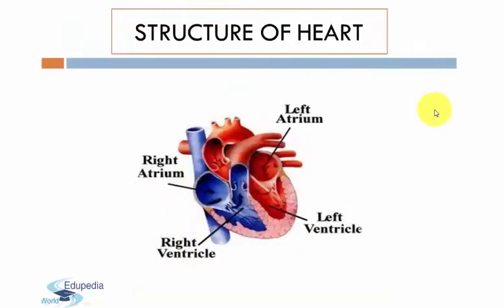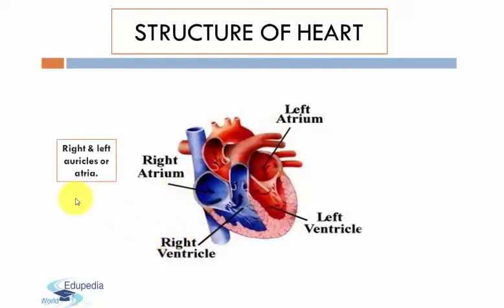There are four chambers present in the heart. The upper two chambers constitute the right and left auricles, or atria. The singular term for atria is atrium.